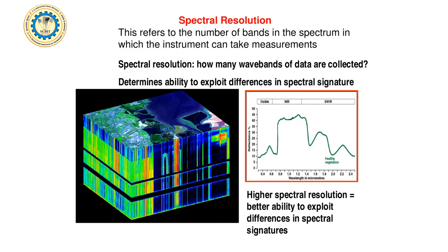Spectral resolution refers to the number of spectral bands. A band is a single wavelength range — for example, red, green, and blue for true color. Clarity increases with more bands. Hyperspectral images divide a single color like blue into many smaller segments, producing much richer images that are very good for interpretation purposes.